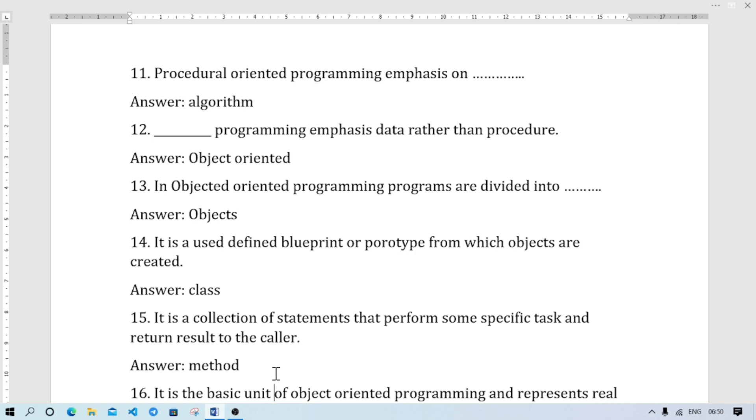It is a user-defined blueprint or prototype from which objects are created. It will be class. In object-oriented programming we create a class, inside the class we write methods, and access them specifically. For those doing BCA or MCA, they will understand better how object-oriented programming actually works. For those starting object-oriented programming, procedural programming has very limited features.